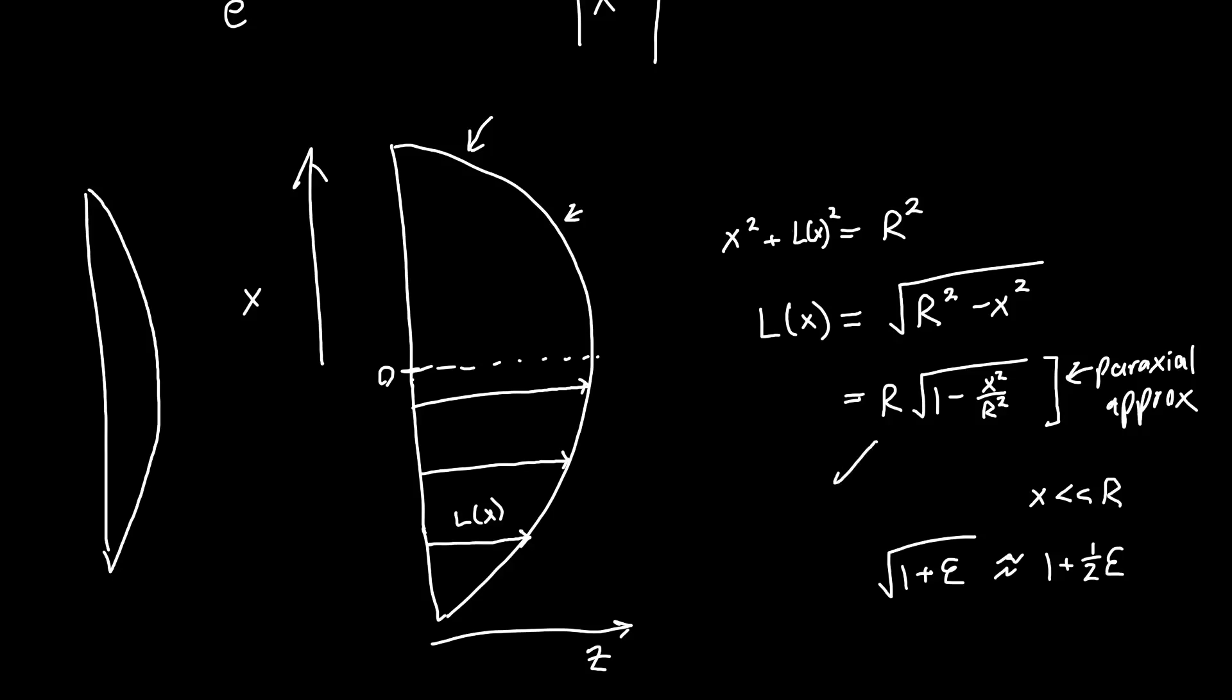This may not be a fantastic approximation, but it's pretty good. So we're just going to use Taylor series expansion of this guy: square root of one plus epsilon is approximately one plus one half epsilon, where we're just keeping the linear term. In that case, this l of x just becomes r minus x squared over two r. This is a parabola, it's in terms of x squared. We're effectively approximating this sphere by a parabola, and that becomes a better approximation as the sphere gets thinner and thinner.